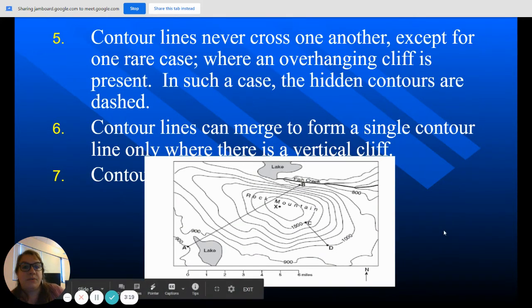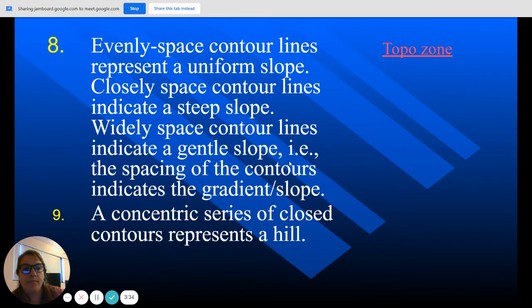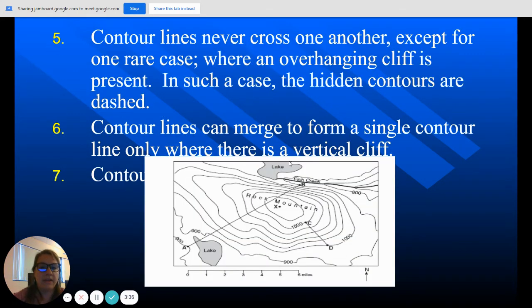Rule number five, contour lines never cross one another except for one rare case where an overhanging cliff is present. And usually with overhanging cliffs, they'll present them to you as dashed lines. I don't think you'll ever see them in, you'll never see them with anything that we're going to do. Now, contour lines can merge to form a single contour line. And that's where there's a vertical cliff.